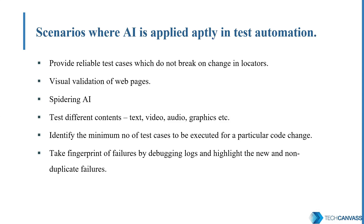Now let's see some scenarios where AI can specifically contribute in automation testing. AI helps in visual validation of our web pages — we can test different types of content like text, video, graphics, audio and lots more. A very critical part of testing is to identify the minimum number of test cases which are sufficient enough to test a particular use case, and with AI algorithms working on it we can solve this problem as well. AI-based tools also give good fingerprints of the test results and thus help a lot in debugging.